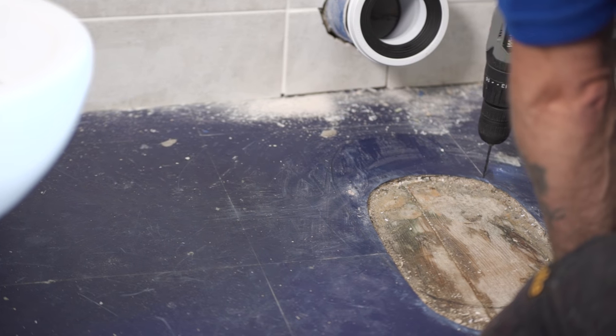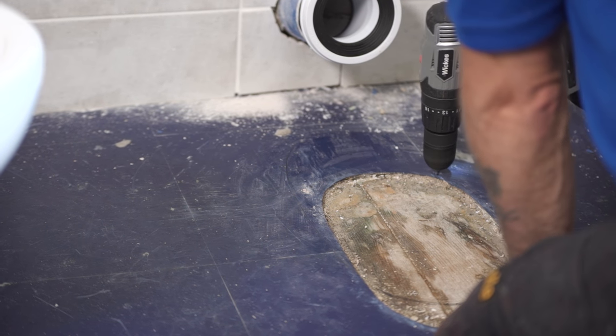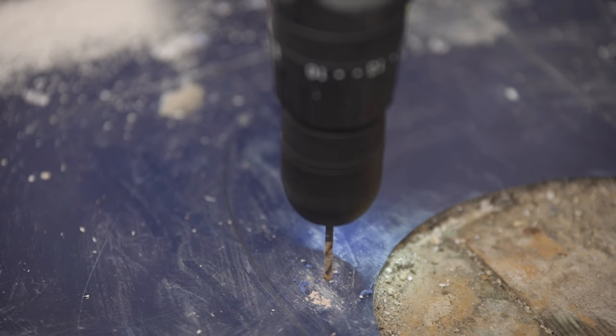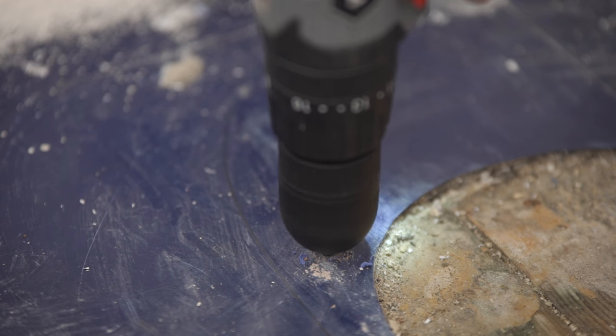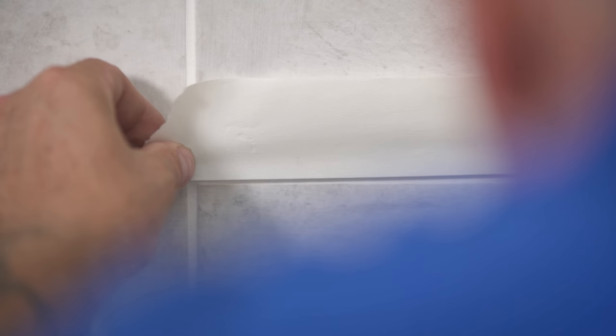Drill your pilot holes, then use a 10 millimeter drill bit to finish them. If you're fitting a toilet to a concrete floor you'll need to use a masonry drill bit and wall plugs. If you're drilling through tiles, apply some masking tape to the tile to stop the drill bit from slipping.